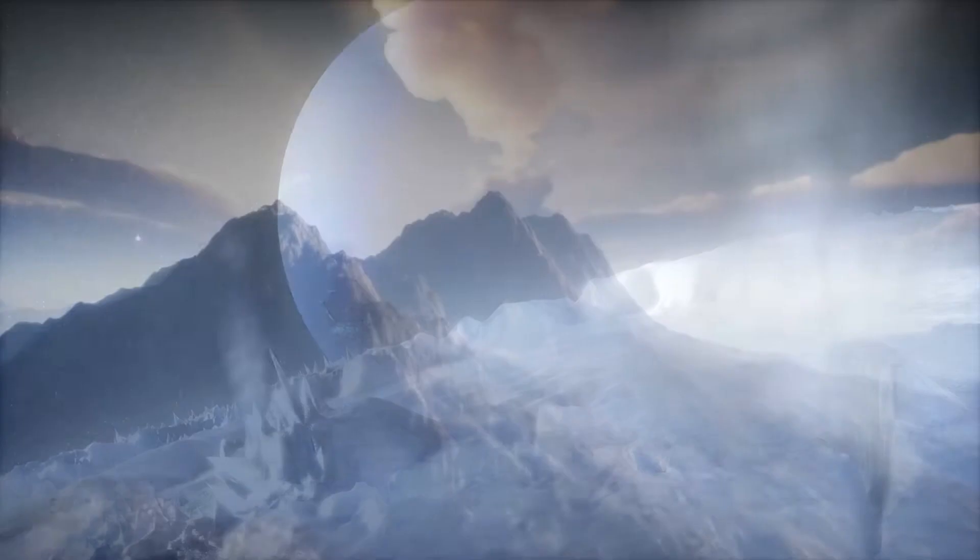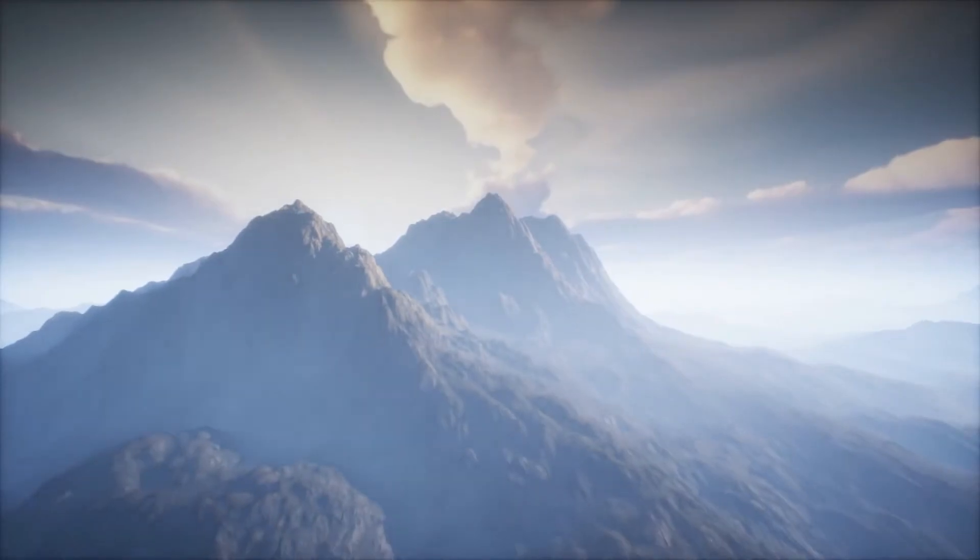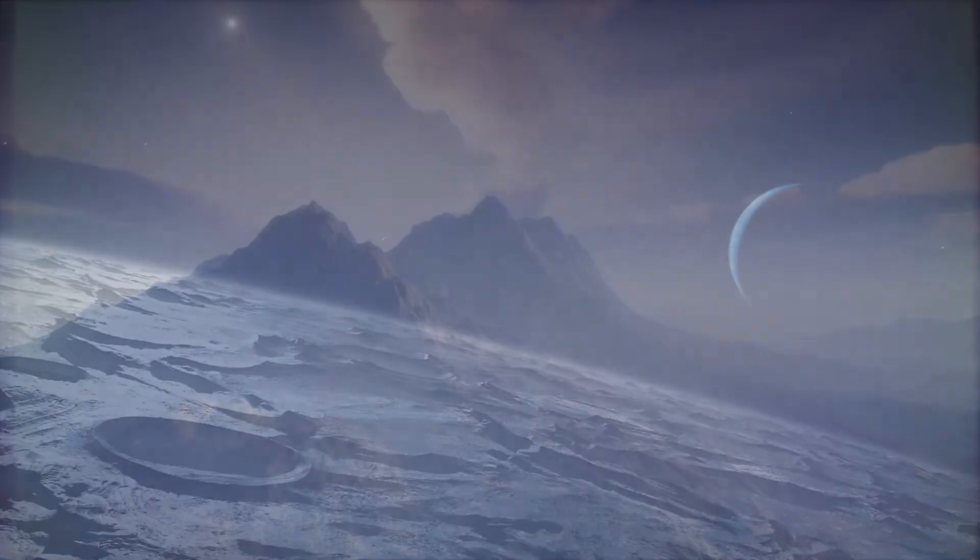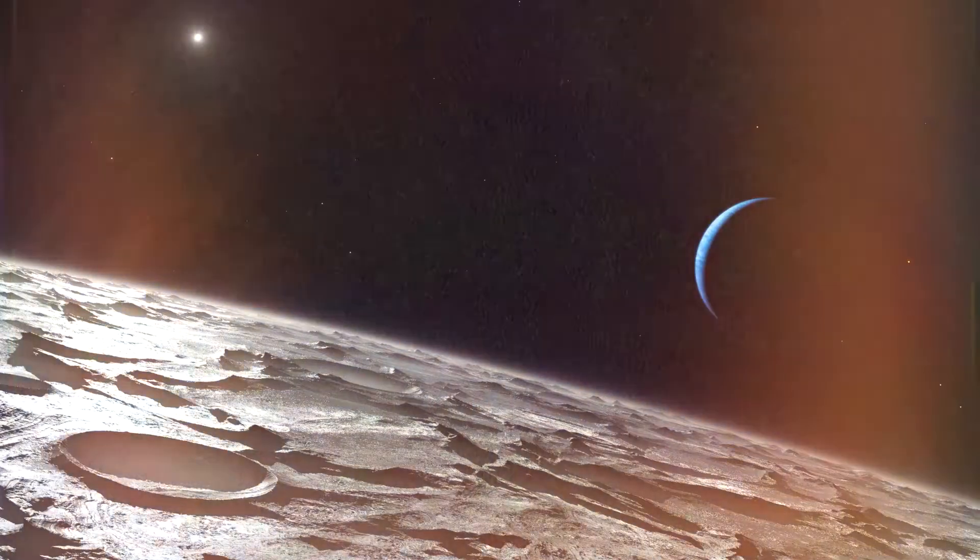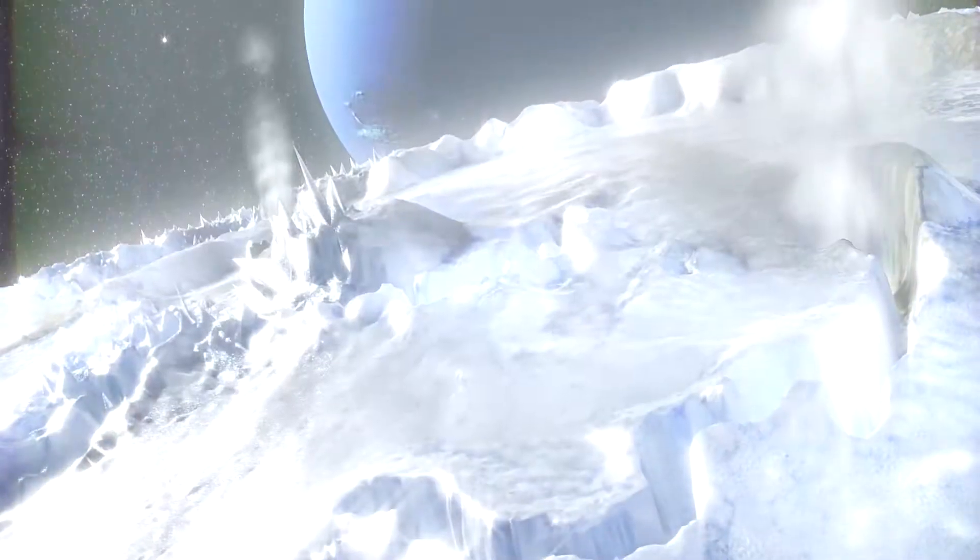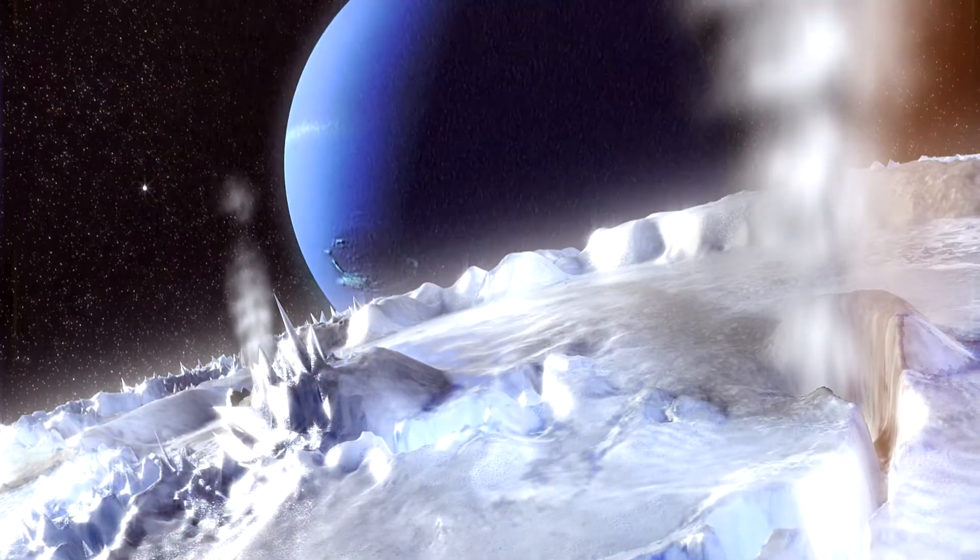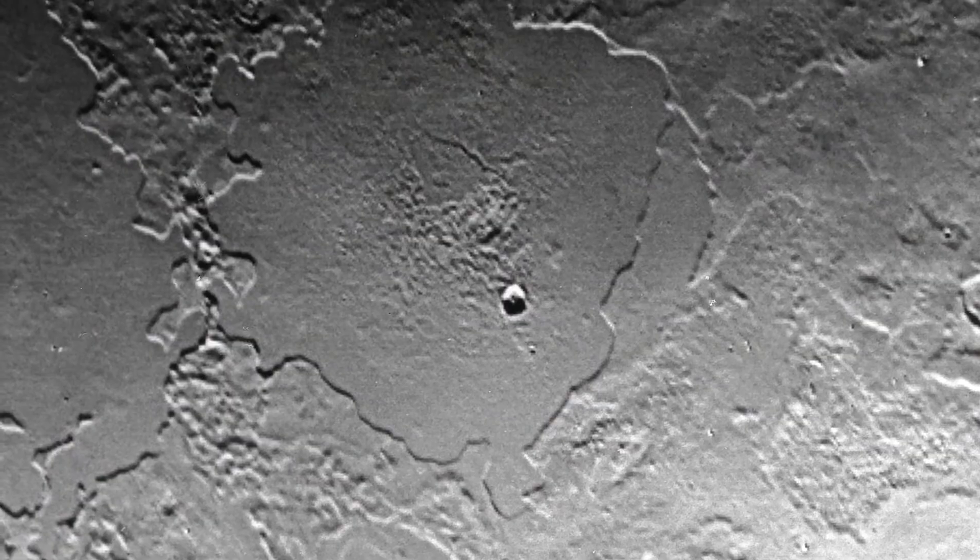However, while Io's volcanoes are thousands of degrees hotter than its sub-freezing surface, Triton is like Elsa. When its geysers let it go, frosty nitrogen gas and unknown dark particles fly up to five miles into its nitrogen-methane atmosphere, building itself an isolated icy kingdom.